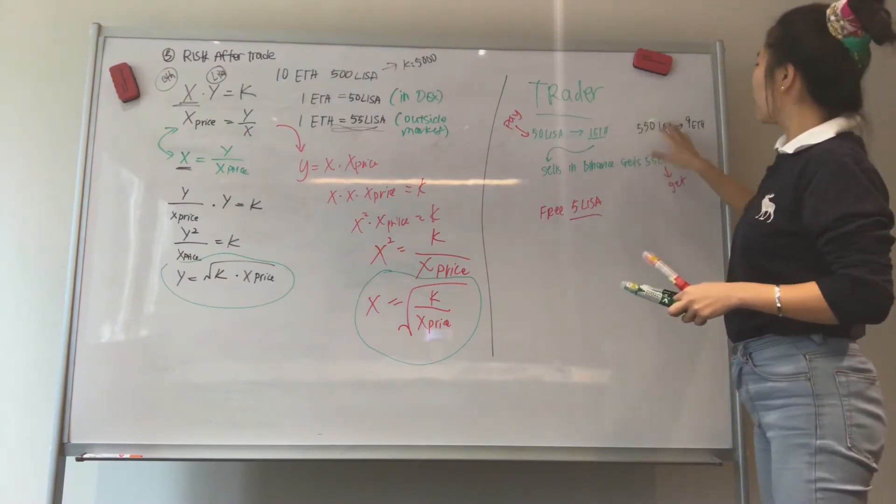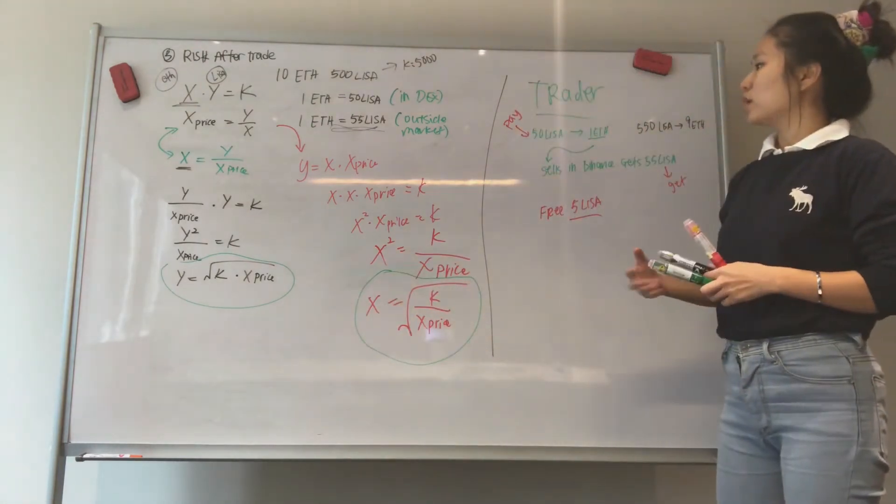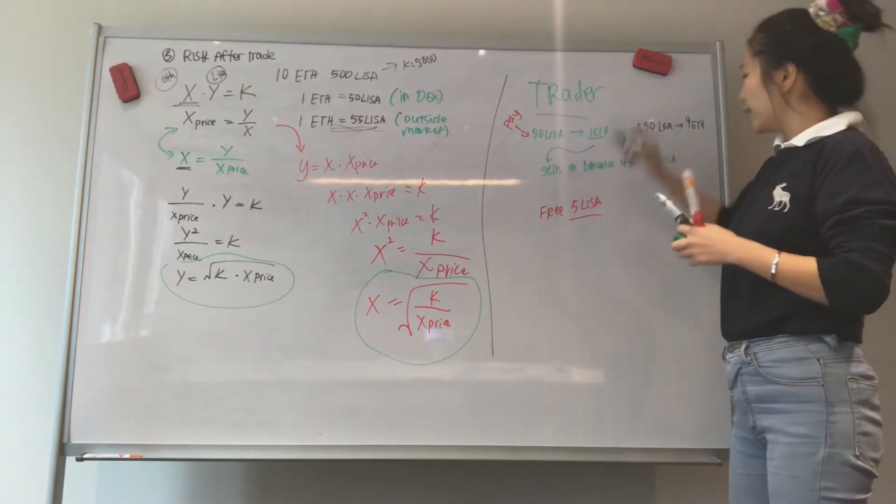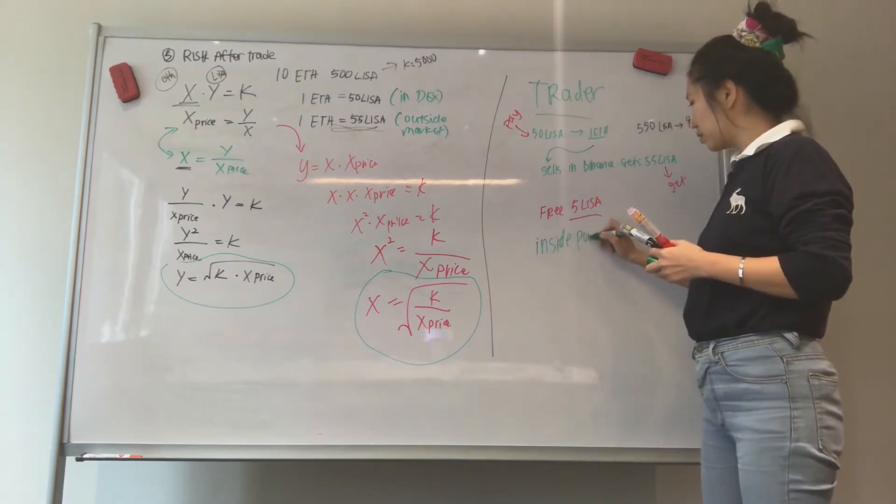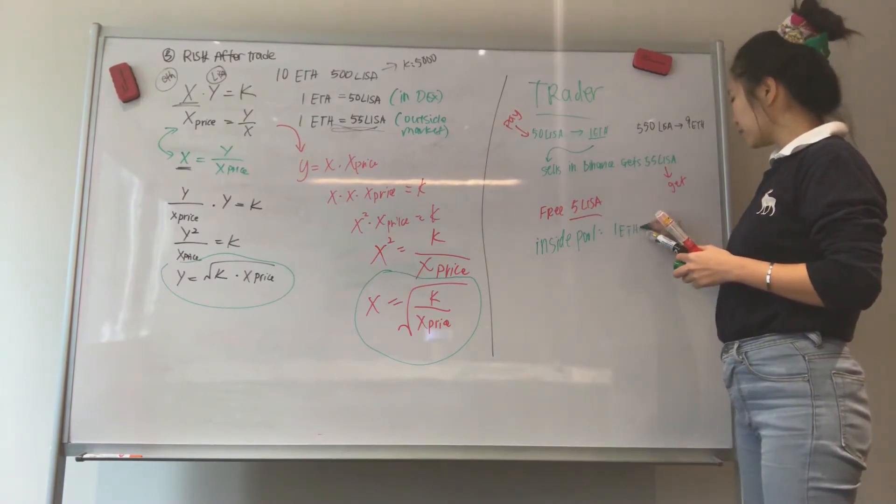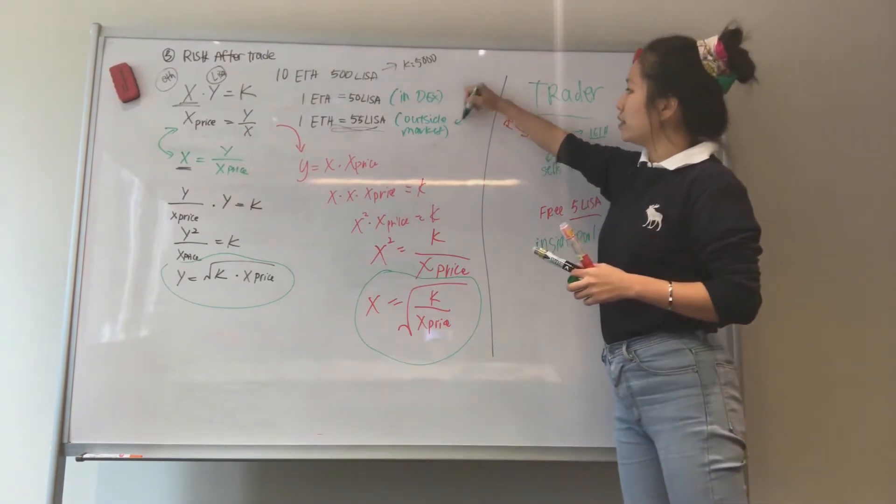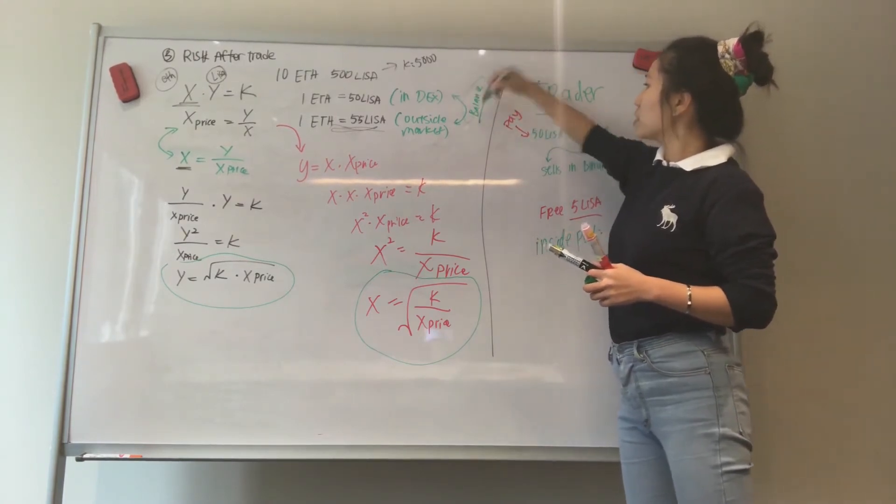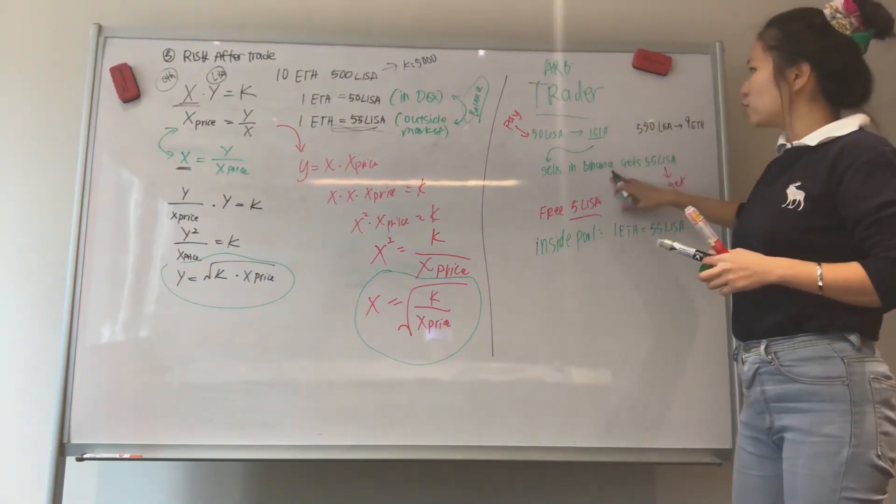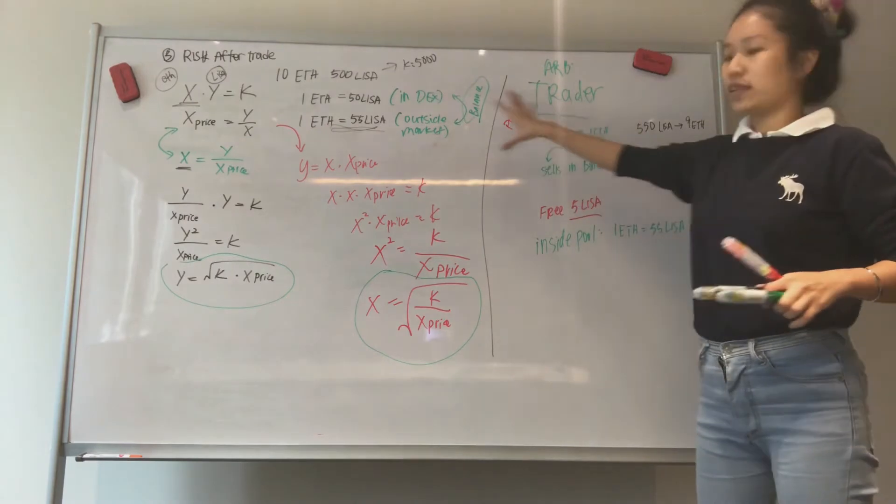So because of this situation, if you plug this information into these formulas, then you realize the ratio keeps changing and will keep changing and rebalancing until inside the pool, you will get the value of 1 ETH equals 55 LISA. So in the end, this will balance. And this will balance because you have these arbitrage traders come in to see the difference, mitigate the difference and get the difference out. So this is what happens when arbitrage traders are trading.